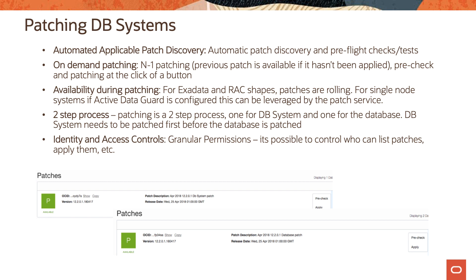You can use OCI's Identity and Access Management controls to control who can list patches, apply them, etc. This is useful when you have many database administrators in your organization and you want to give the ability to apply patches to only a select few. You create multiple groups in IAM and put the database administrators who can apply patches into the IAM group that has the permissions for applying patches.